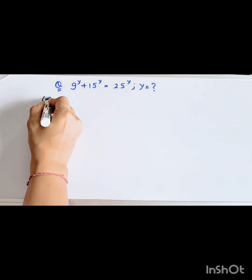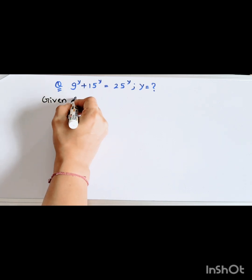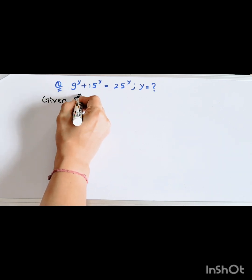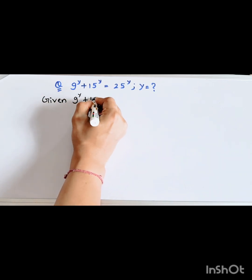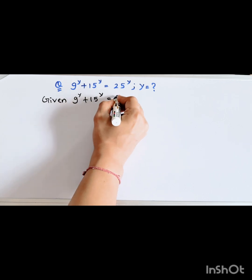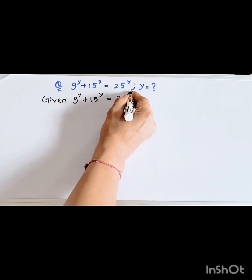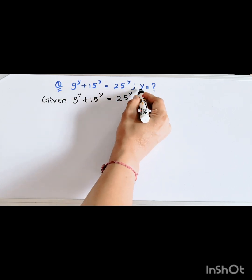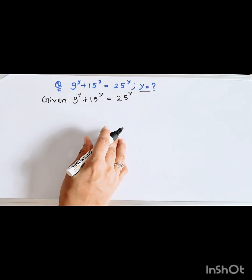We are given: 9 to the power y plus 15 to the power y equal to 25 to the power y. Then find the value of y.